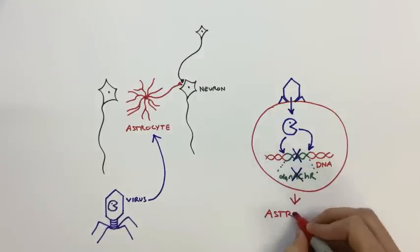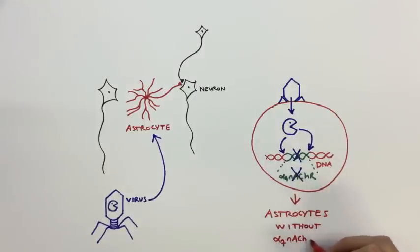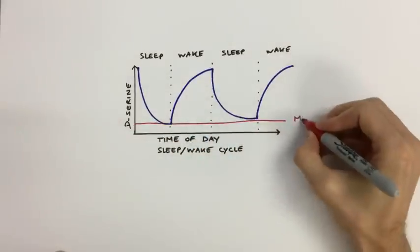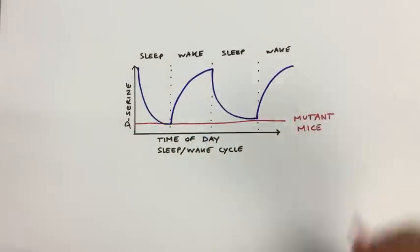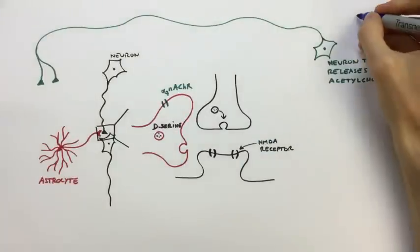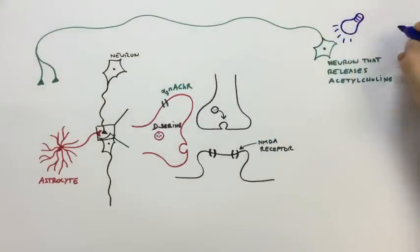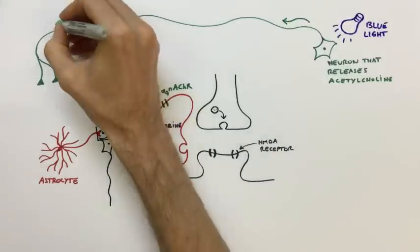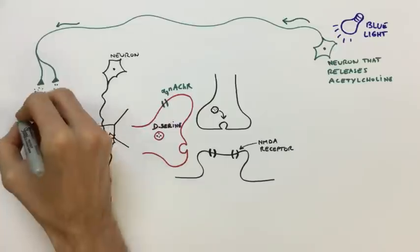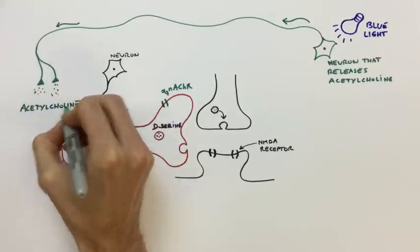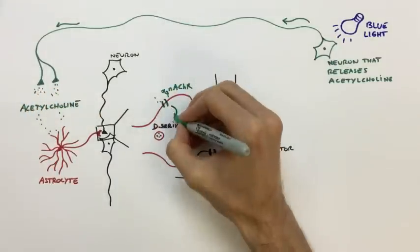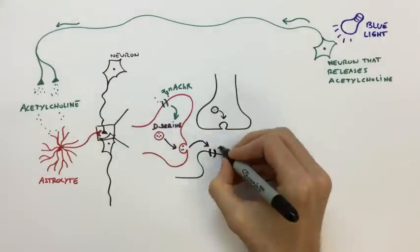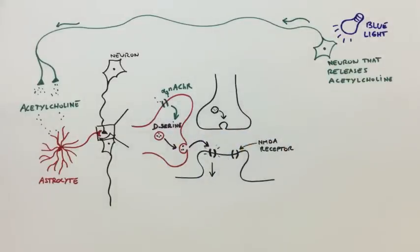What they found is that when alpha-7 nicotinic acetylcholine receptors were deleted from astrocytes, d-serine levels were low, constant, and unaffected by the state of arousal of the mouse. Additionally, using a technique called optogenetics, authors were able to directly stimulate the neurons responsible for releasing acetylcholine in the brain with blue light. They found that this increased d-serine levels, except when they blocked alpha-7 nicotinic acetylcholine receptors — concluding that alpha-7 receptors is what links d-serine levels and acetylcholine levels.